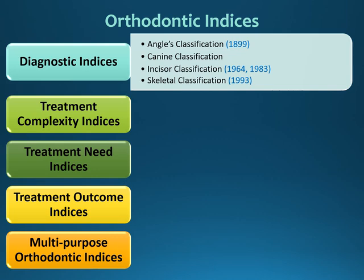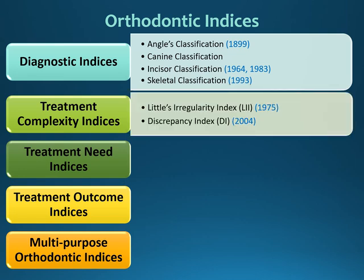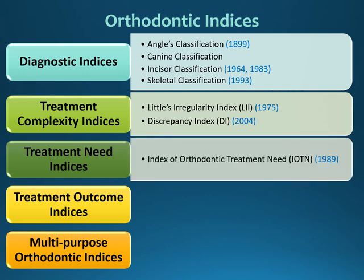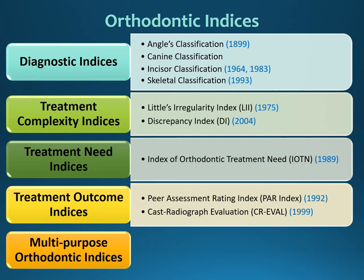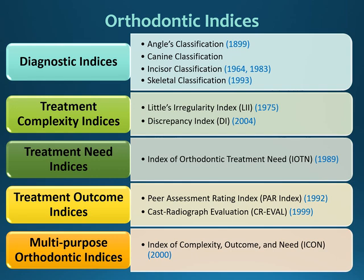For diagnostic indices, we will go through Angle's classification, canine classification, incisor classification, and skeletal classification. For treatment complexity indices, we will cover the Little's irregularity index and the discrepancy index. The Index of Orthodontic Treatment Need is an example of treatment need indices. For treatment outcome indices, we have the Peer Assessment Rating index and the CAS radiographic evaluation. The Index of Complexity, Outcome and Need (ICON) is an example of multipurpose orthodontic indices.